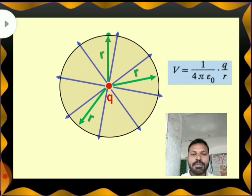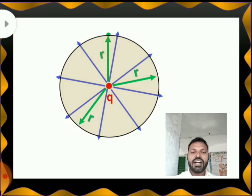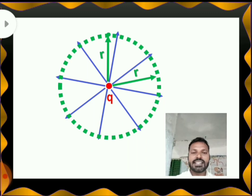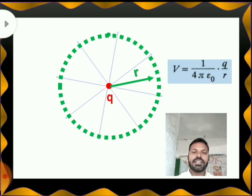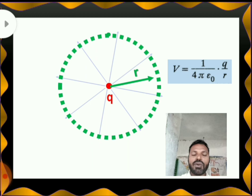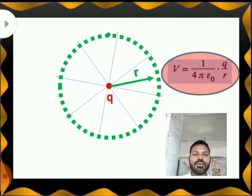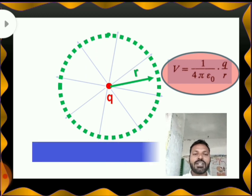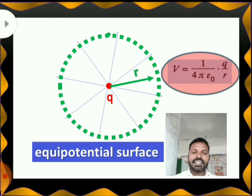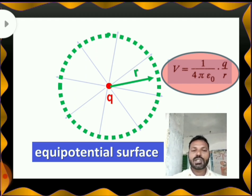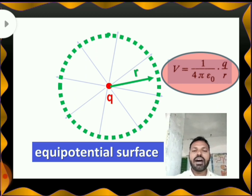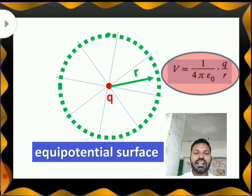This is my circle with radius R. Taking all points on that circle — if you see the distance from the center, every point is at the same distance R only. At one point, my V is equal to 1 by 4 pi epsilon-naught Q by R. Take another point at the same distance — again 1 by 4 pi epsilon-naught Q by R. That implies on this circle, all the points are at equal distances, so I will get equal potential for all points. If you join all these points, this surface is called an equipotential surface.